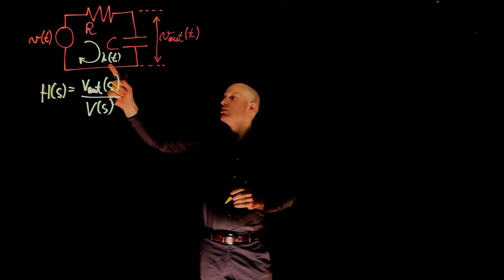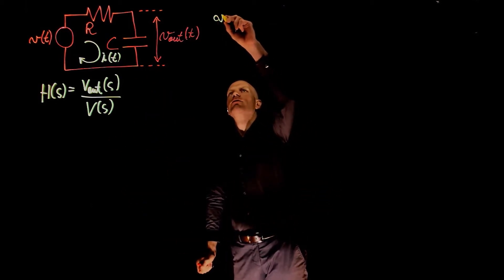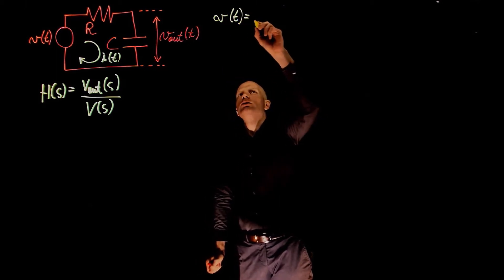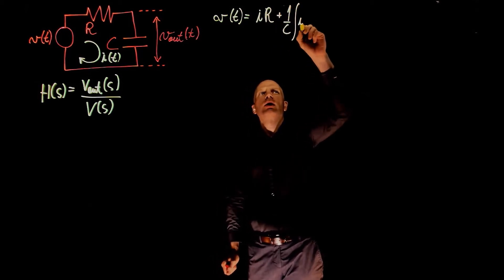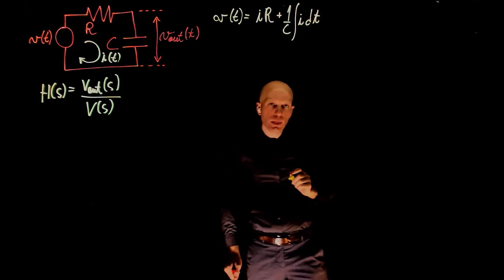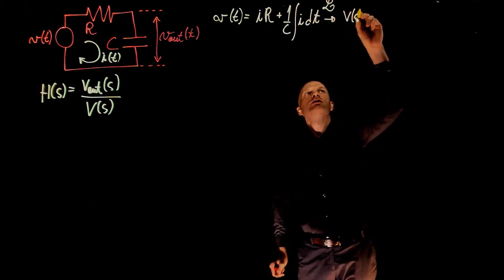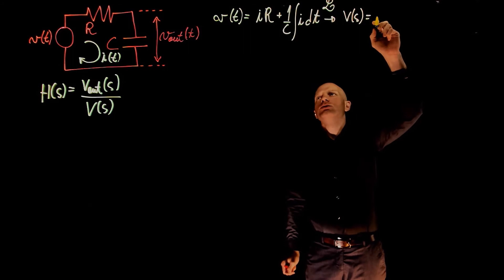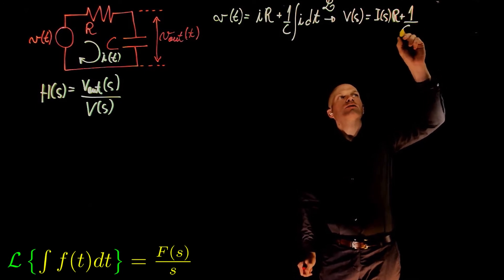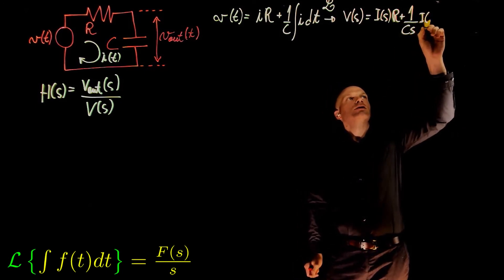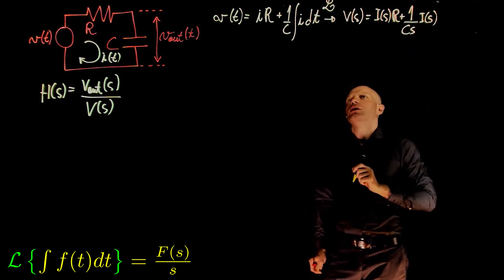Let's start with the relation between I and V. Applying Kirchhoff's law to that loop gives V of t equals I times R plus 1 over C integral of I dt. Taking the Laplace of this equation gives V of s, now in the frequency domain, equals I of s times R plus 1 over Cs times I of s, where 1 over s represents the integral in the frequency domain.